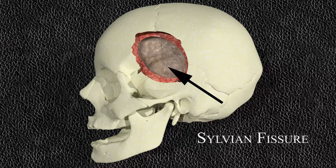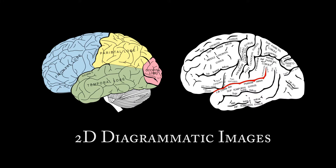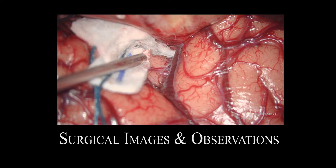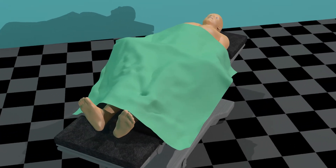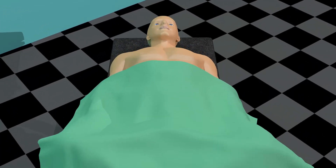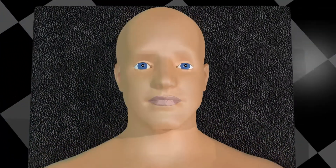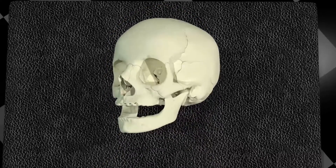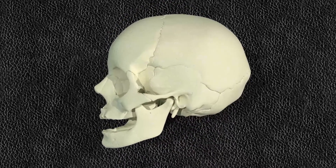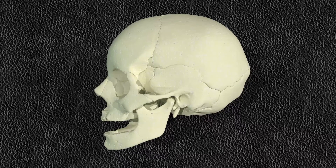Currently the anatomy of the sylvian fissure and its dissection are taught through the use of 2D diagrammatic images, lectures and surgical observations such as these presently shown. This animation demonstrates an anatomically correct 3D representation of the dissection of the sylvian fissure, which is a key process in the successful clipping of a cerebral aneurysm. This model was generated through the utilisation of real patient CT and MRI scan data.